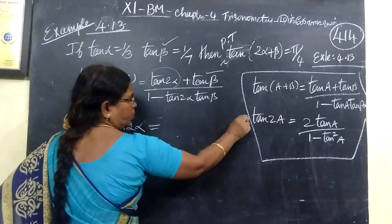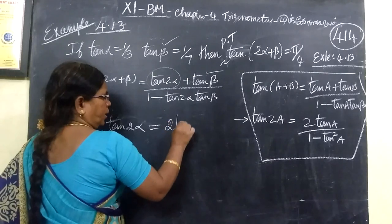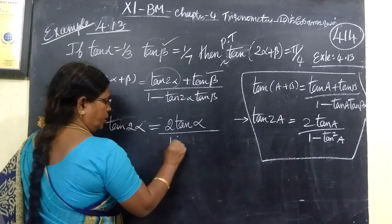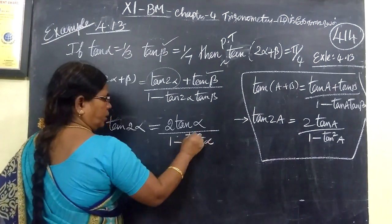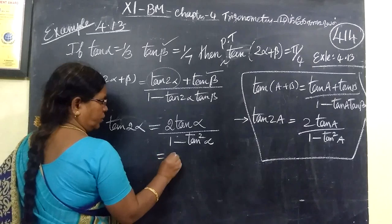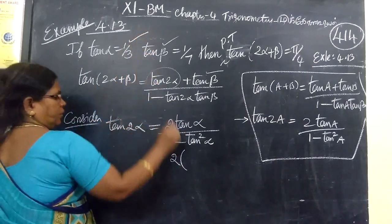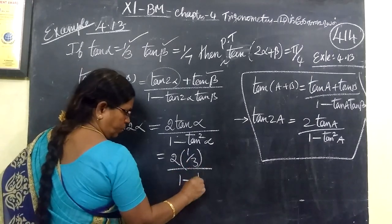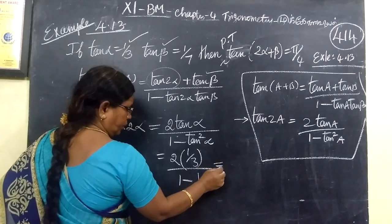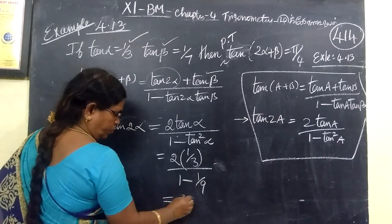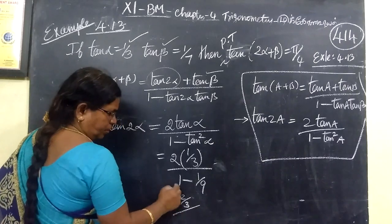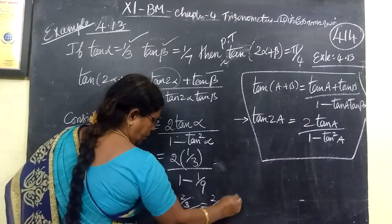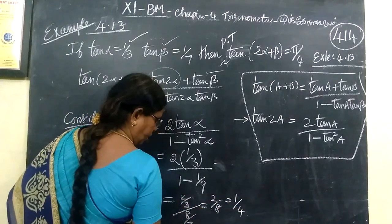Equal to 2 tan α by 1 minus tan square α. So, equal to 2 by 3, then 1 minus 1 by 9. So equal to 2 by 3. Now, cross multiply 8 by 3, 3 cancel. So, 2 by 8 equal to 1 by 4.